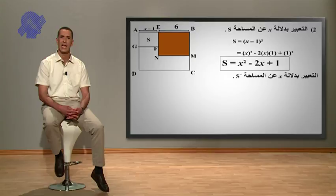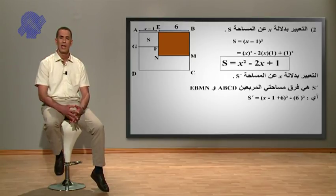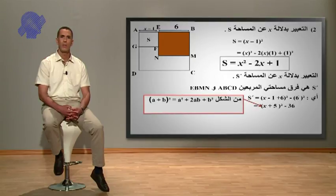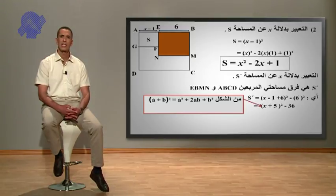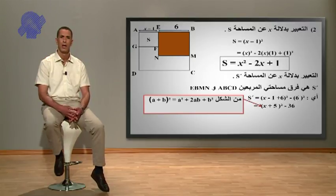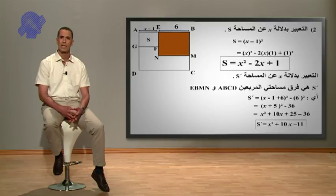التعبير بدلالة x عن المساحة S فتحة: S فتحة هي فرق مساحتي المربعين ABCD و EBMN. أي S فتحة تساوي (x ناقص 1 زائد 6) الكل مربع ناقص مساحة المربع EBMN والتي تساوي 6 مربع. إذن S فتحة تساوي (x زائد 5) الكل مربع ناقص 36. بتطبيق المطابقة الشهيرة (A زائد B) الكل مربع نتحصل على S فتحة تساوي x مربع زائد 10x زائد 25 ناقص 36، بعد التبسيط نجد S فتحة تساوي x مربع زائد 10x ناقص 11.